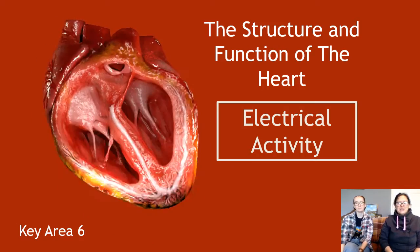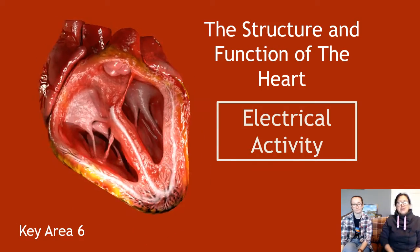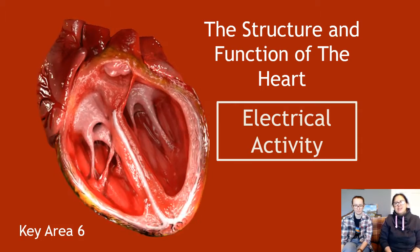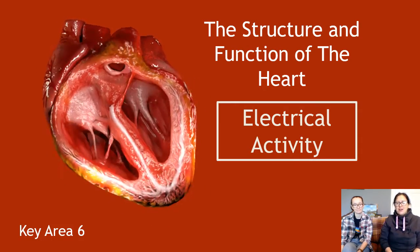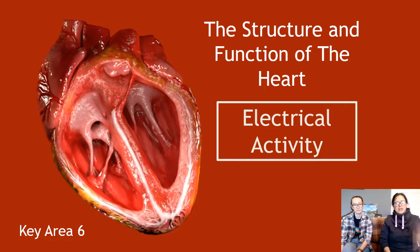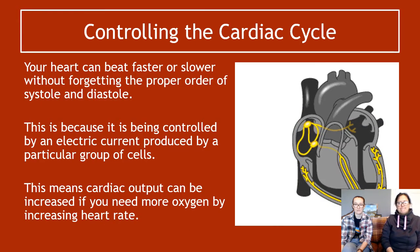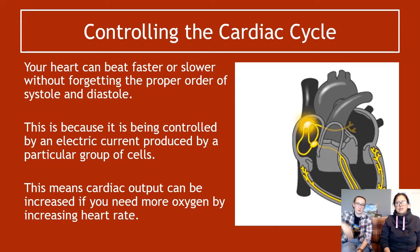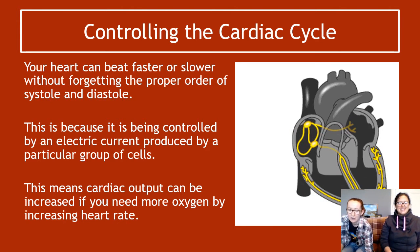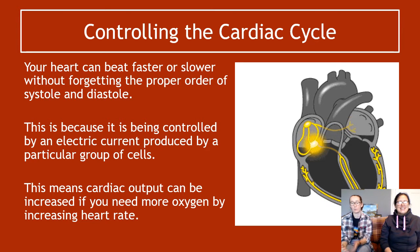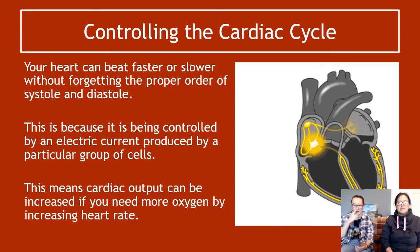We are into video three of key area six of unit two of Higher Human Biology, still on structure and function of the heart. This video is going to focus on the electrical activity and electrical control of the heartbeat. In terms of controlling the cardiac cycle — one full heartbeat — your heart can beat faster or slower without changing the order of going through systole and diastole.